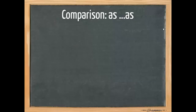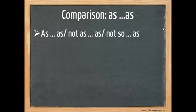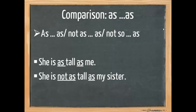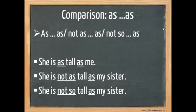Now, let's have a look at the construction that we call as as. Here again, we are comparing two things. So, this goes for as as, or not as as, or not so as. She's as tall as me. So, we both have the same height. She's not as tall as my sister. Now, you can use not as as, but we can also use not so as. There's no difference there. So, she's not so tall as my sister.